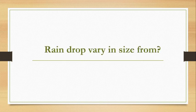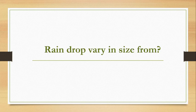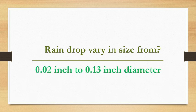Rain drops vary in size. The size of a raindrop varies from 0.02 inch to 0.13 inch in diameter.